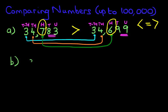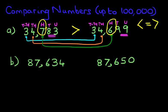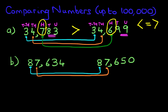We're now going to move to our second example. There's our first number and there's our second number. Both numbers have five digits. We're not going to label them this time — we're just going to go ahead and work through which is larger and which is smaller. Again, we start on the left-hand side. We've got eight ten-thousands here and eight ten-thousands here, so they are exactly the same. We then move on to the thousands — we've got seven thousands on the left and seven thousands on the right.